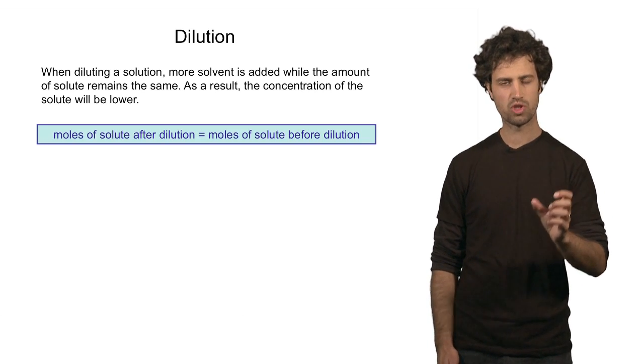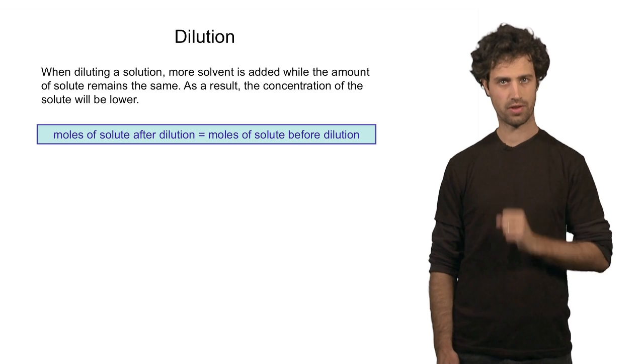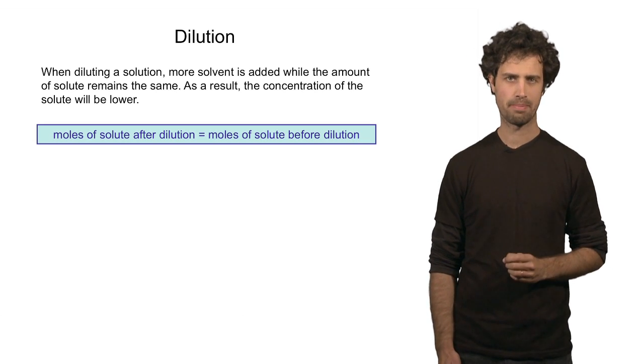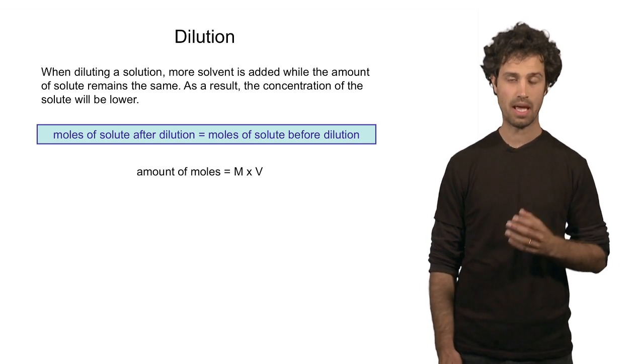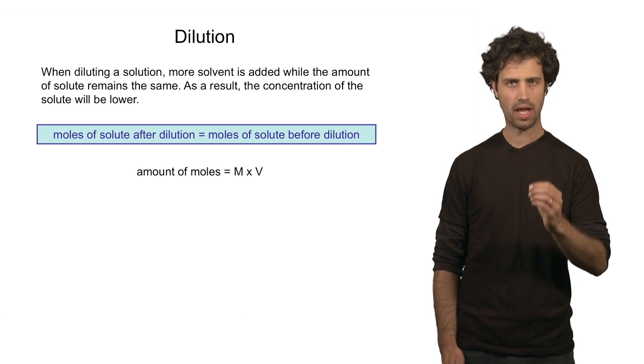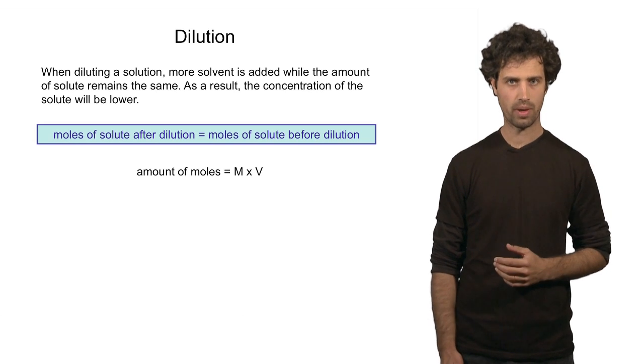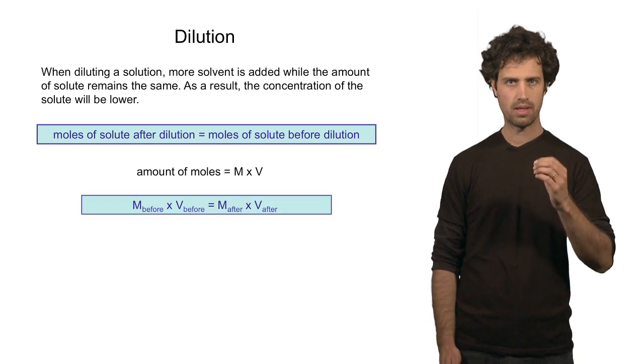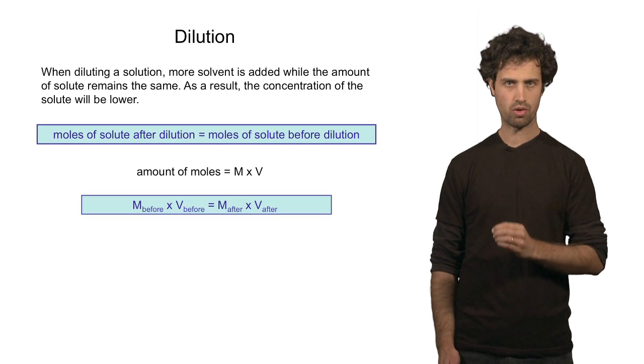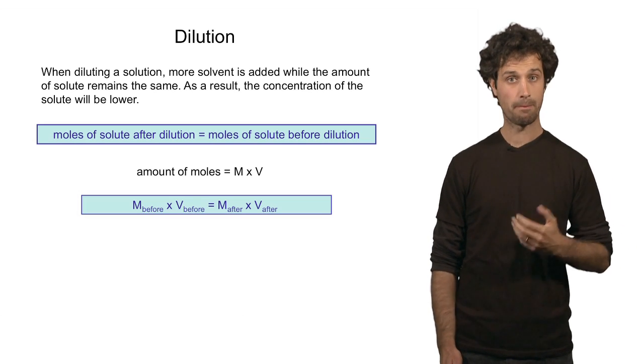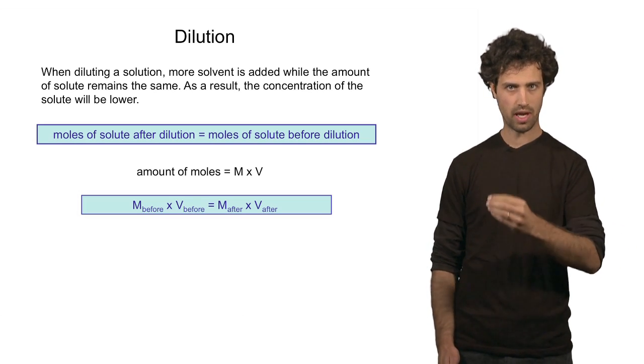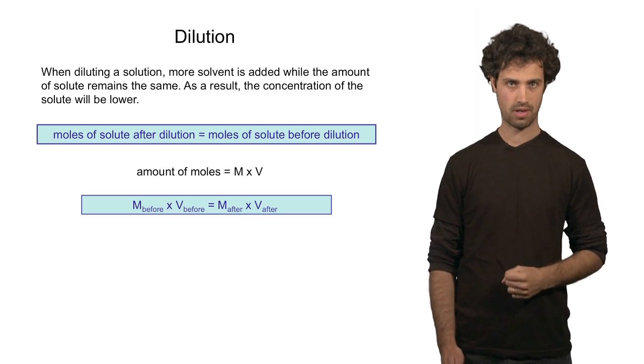That means the number of moles before and after the dilution is the same. The number of moles can be calculated as molarity times volume. So I can derive the following formula: the molarity times volume before the dilution must be the same as the molarity times volume after the dilution.